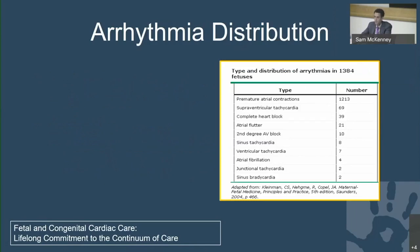Looking at arrhythmia distribution, there is a whole range of different types of arrhythmias ranked by incidence. Premature atrial contractions at the top have the highest prevalence at a little more than 1,200 of the 1,300 total fetuses with arrhythmia, followed by supraventricular tachycardia, complete heart block, atrial flutter, lesser degrees of heart block, secondary heart blocks, sinus tachycardia, VT, atrial fibrillation, and then rare things like junctional tachycardia and sinus bradycardia.